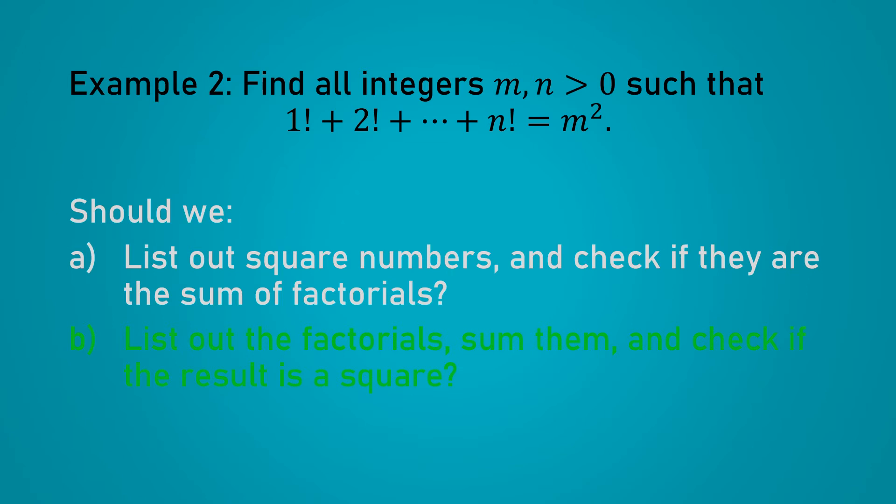I think most of us would intuitively prefer the second. And that's because it is easier to check whether something is a square number than to check whether something is the sum of factorials. And also, there are many more square numbers to list as compared to factorials, since square numbers grow more slowly. Remember that even though we are getting our hands dirty, we are not deliberately going to do something silly to slow ourselves down.